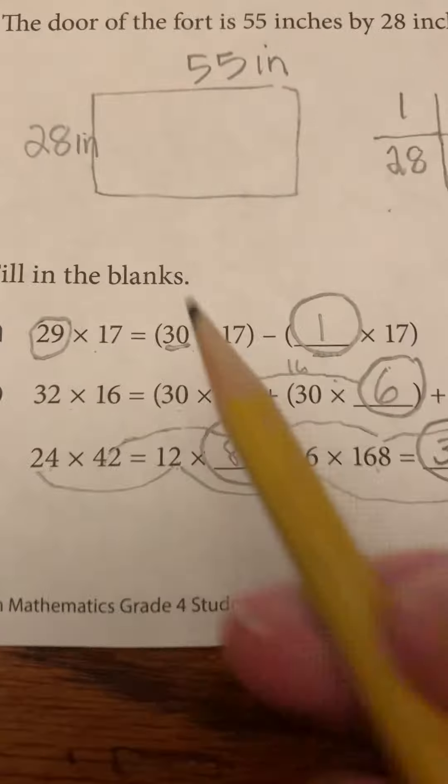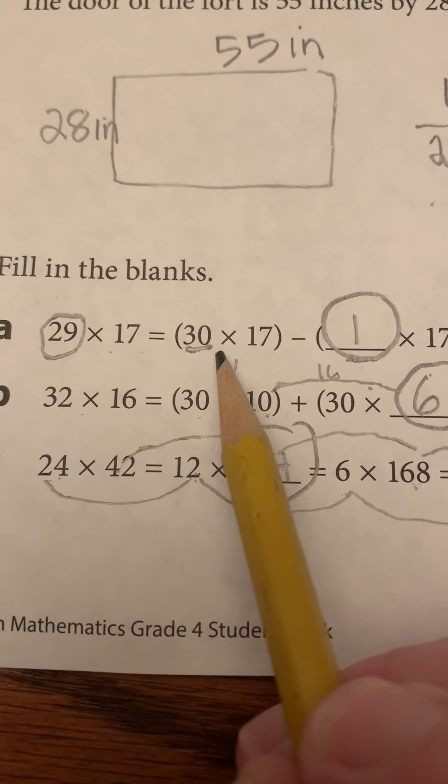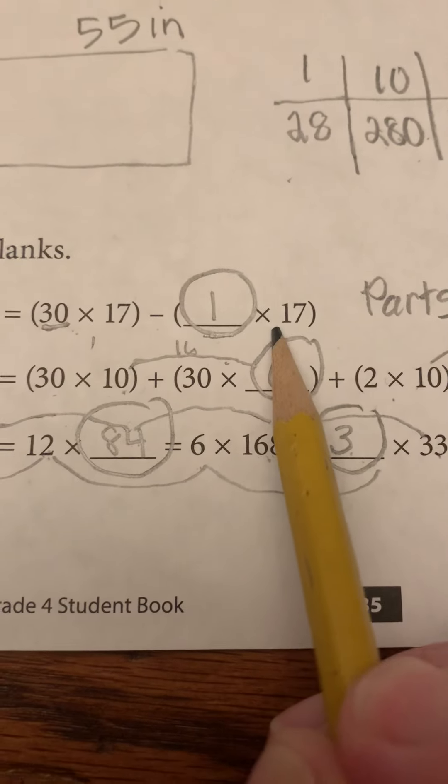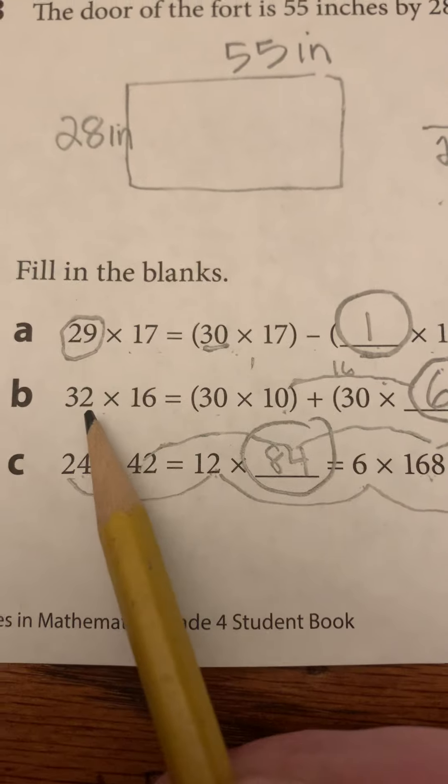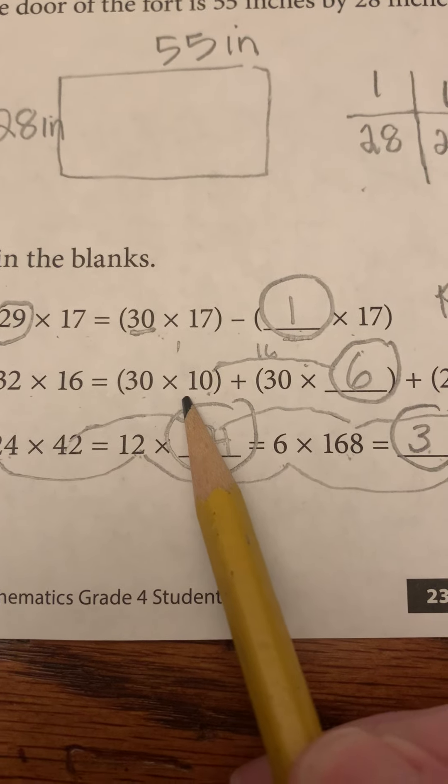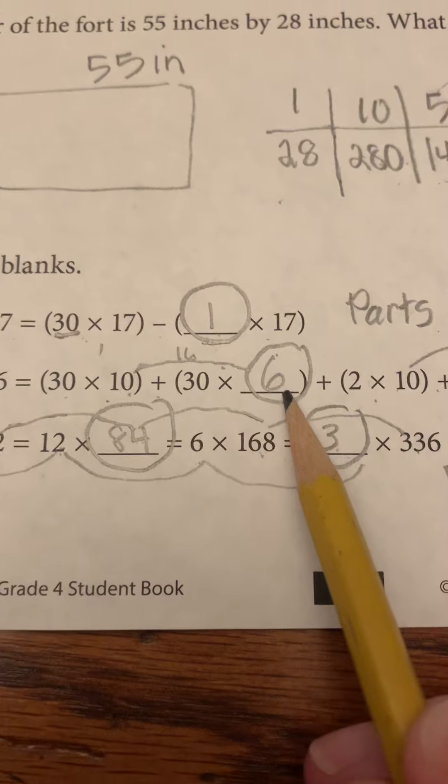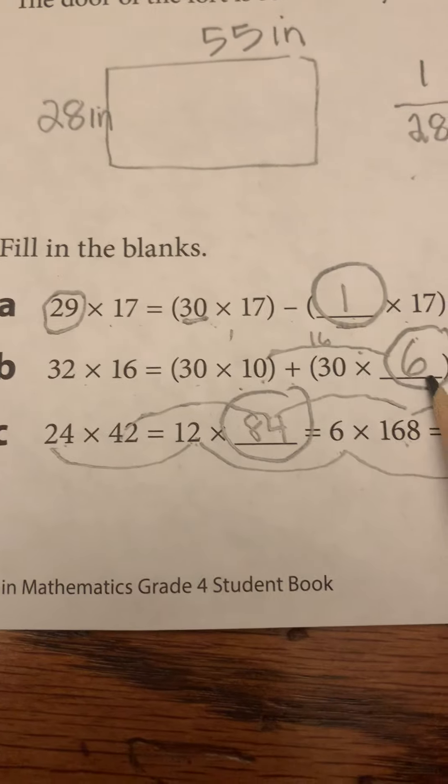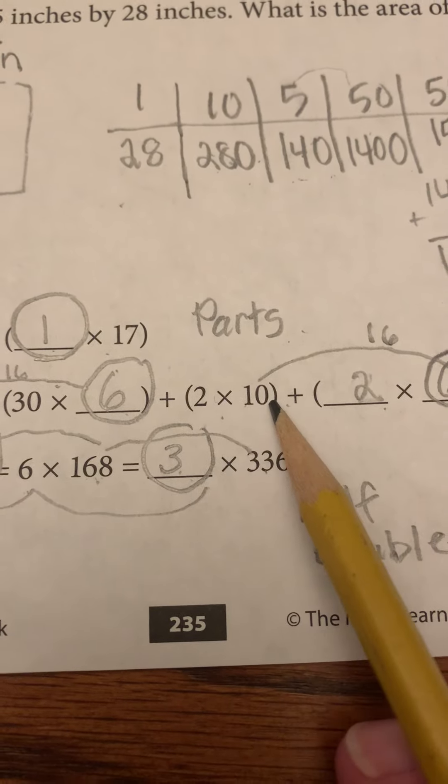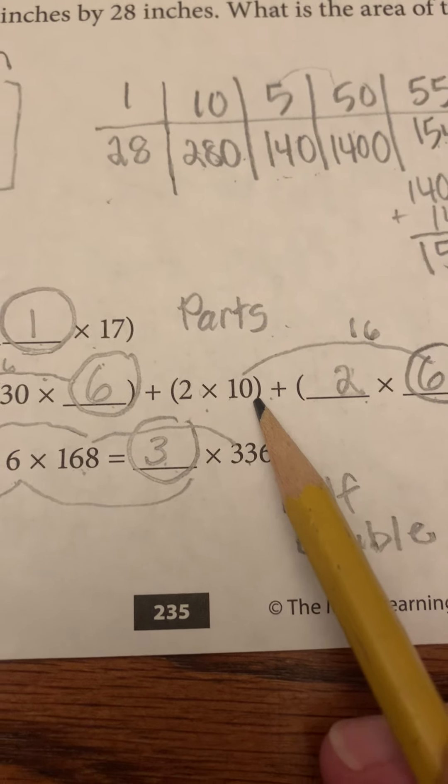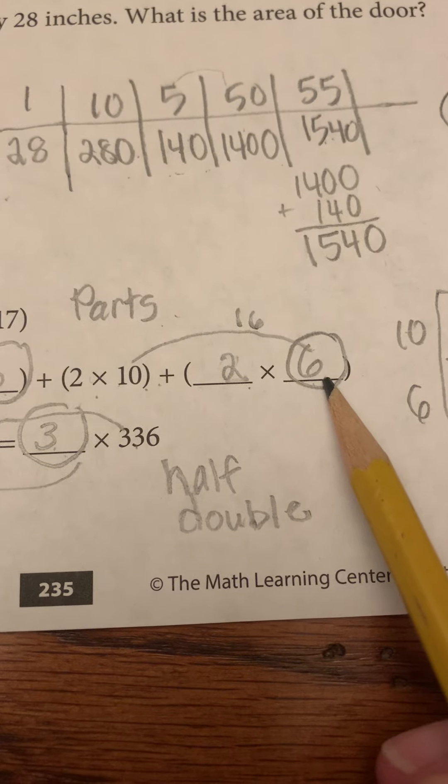Then we were filling in the blanks. 29 times 17 is 30 sets minus 1 set. Putting a 1 there. 32 times 16 is 30 sets plus 6 sets. And then we have to do the 2. 2 times 10. 10 sets of 2. And then 6 sets of 2.